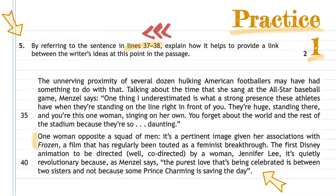So we know 'a squad of men' refers back, and we circle or underline that. We look for a direct link in the passage — I've underlined 'hulking American football players' because it makes sense with 'a squad of football players'. Then we need to find the link forward. After the colon, it's talking about 'a feminist breakthrough', Frozen being a feminist breakthrough. So I need to look forward and see if there's anything that discusses either Frozen or feminism, which there is.